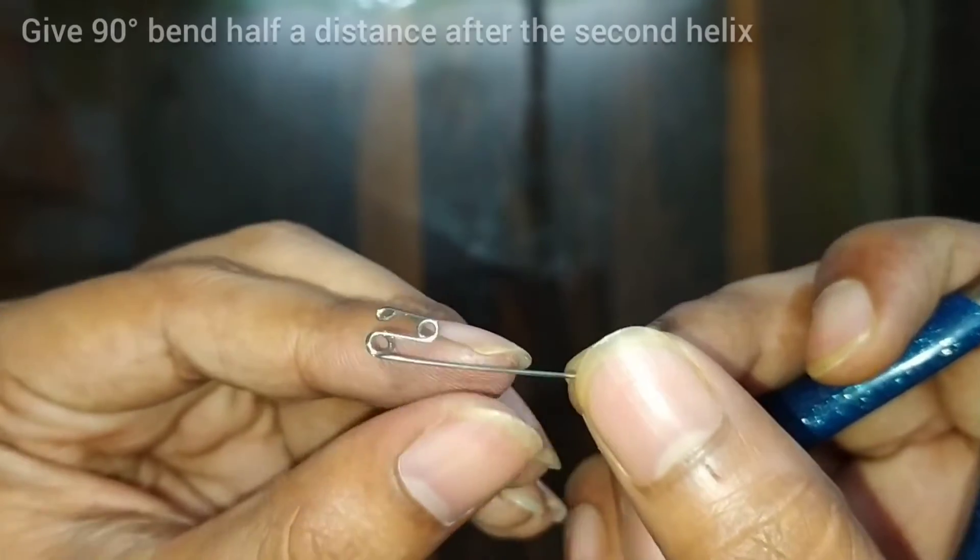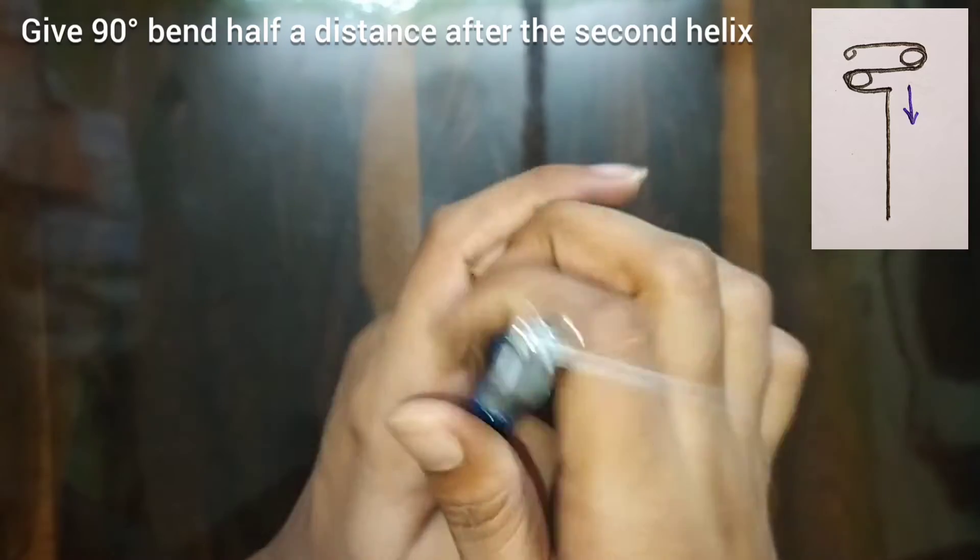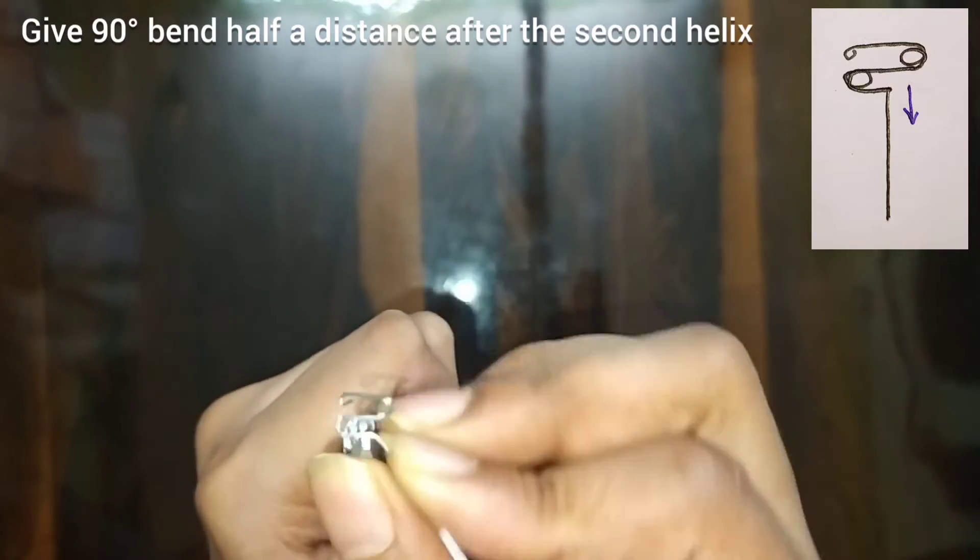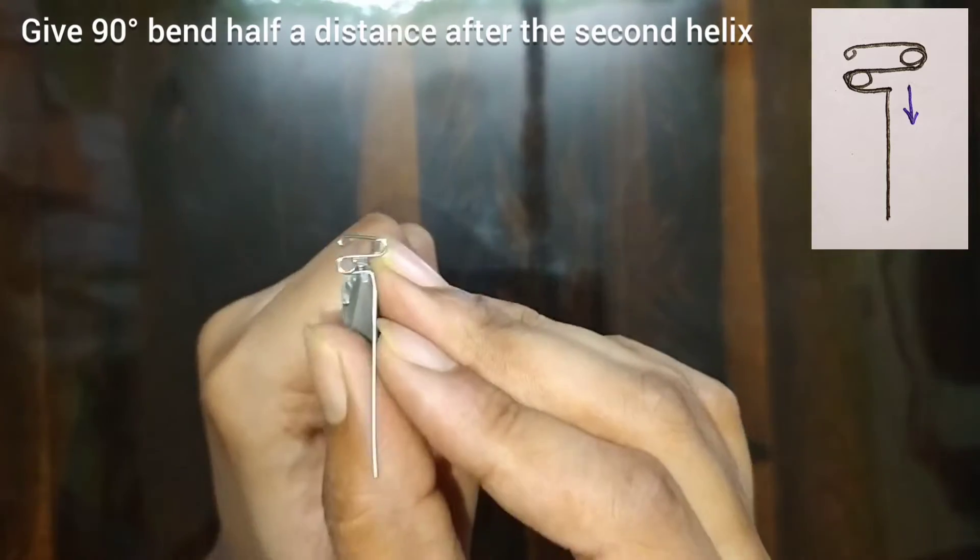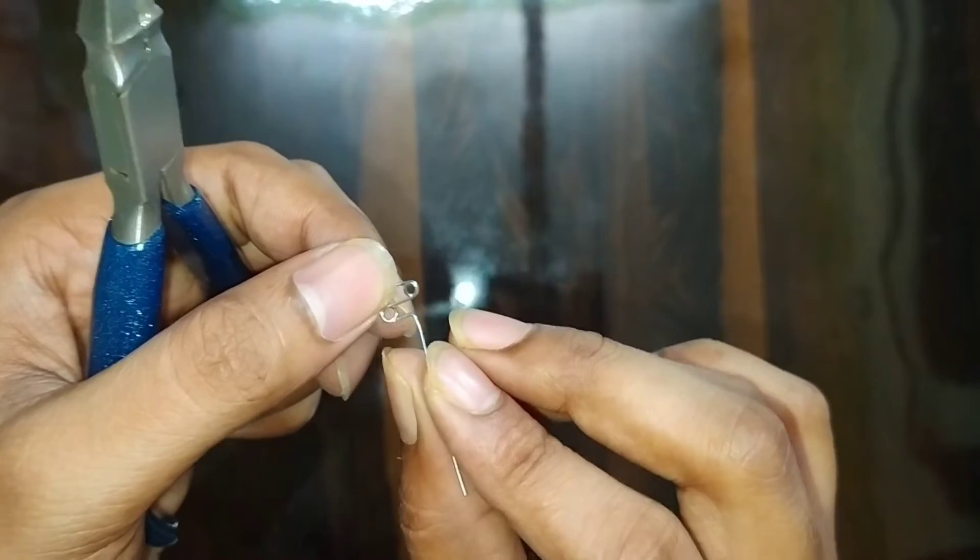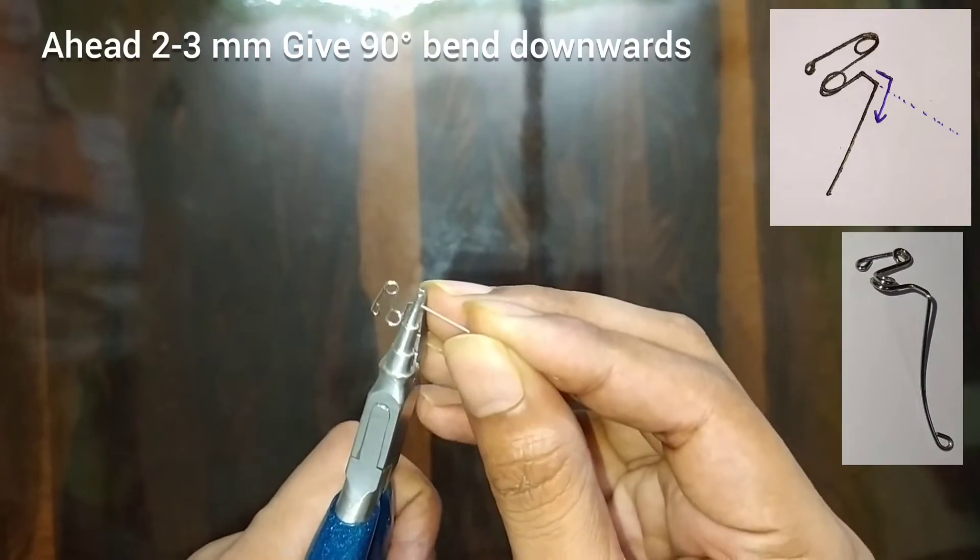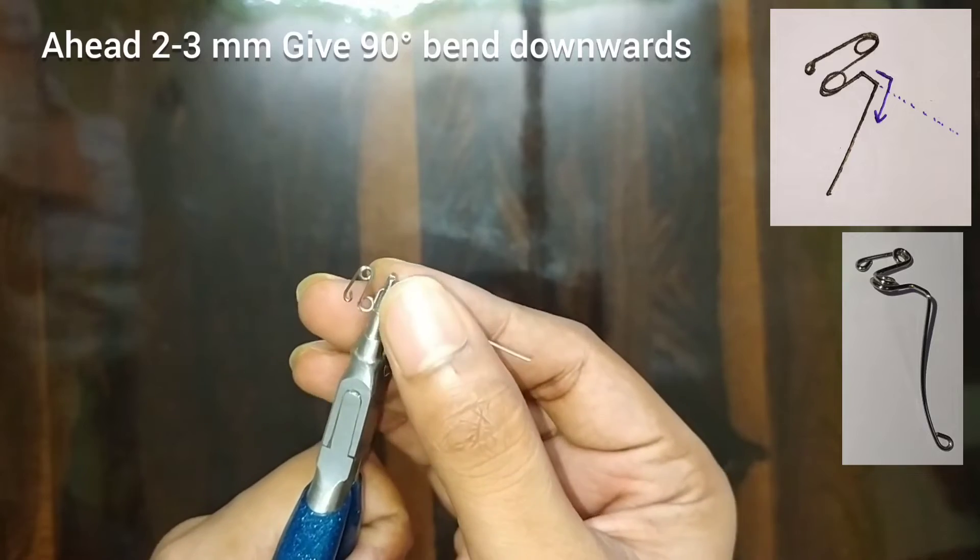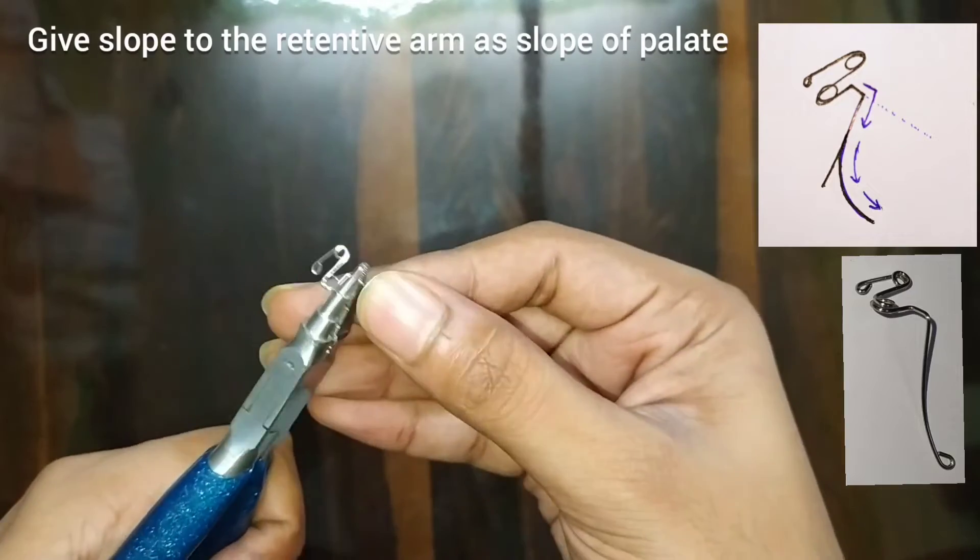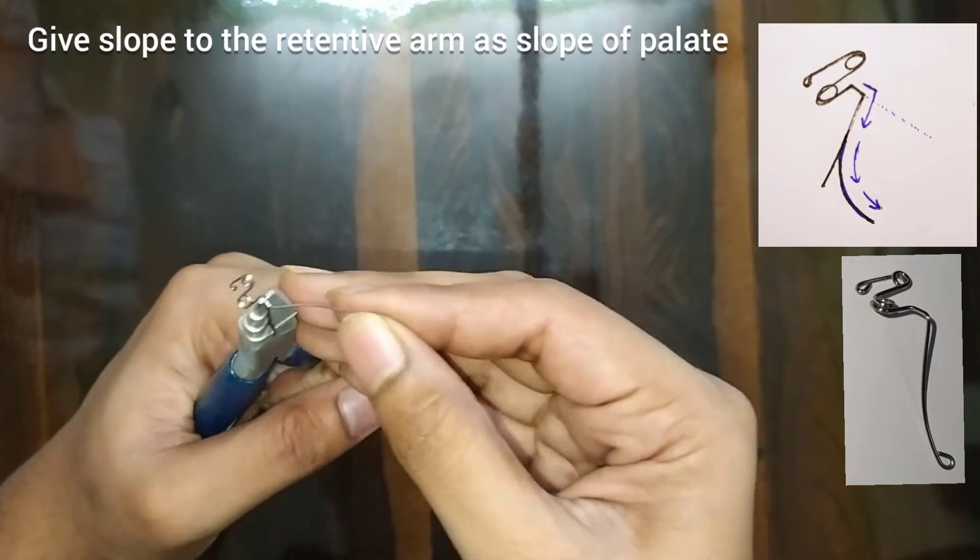After this, at the middle of the mesial distal width of the tooth, give a 90 degree bend. The bend should be in the same plane. Then again give another bend downwards, just 2 to 3 mm ahead, and then make the retentive arms looping.